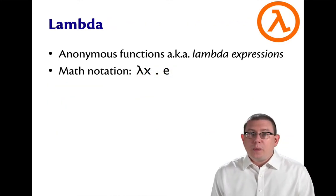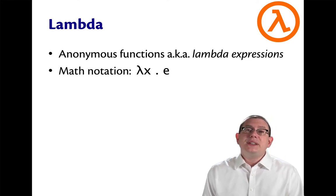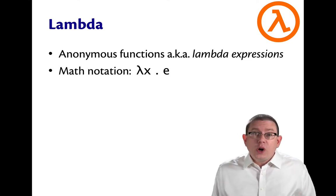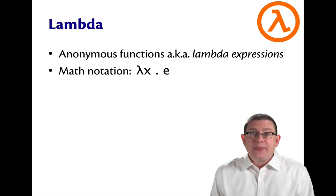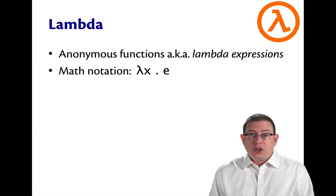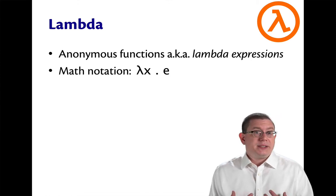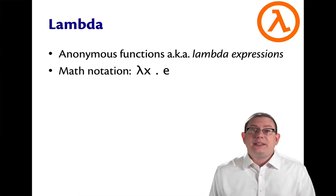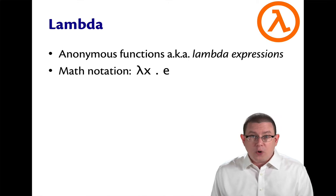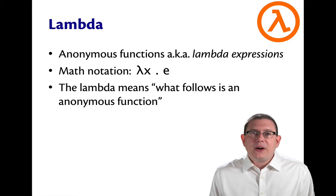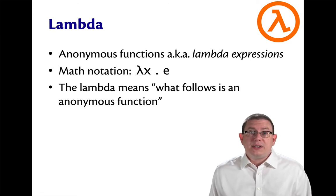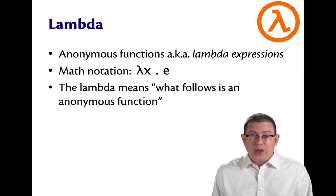Anonymous functions go by another name out in the programming language universe — they're known as lambda expressions. The origin of the name comes from mathematics, specifically from the notation lambda x dot e. This means the same thing as the anonymous function syntax we've already seen in OCaml, just written a little differently. Think of the lambda here as meaning what follows is an anonymous function, just like the fun keyword does in OCaml.